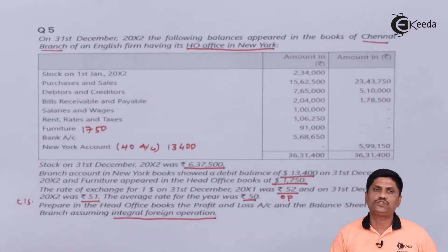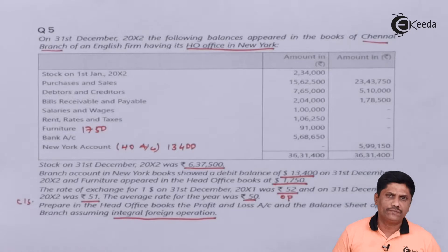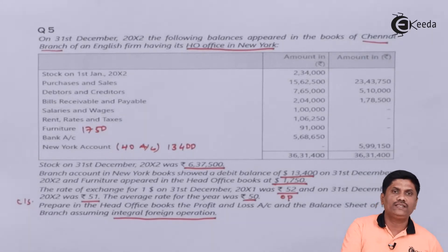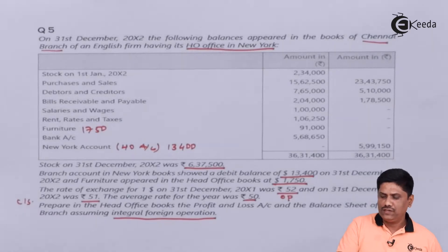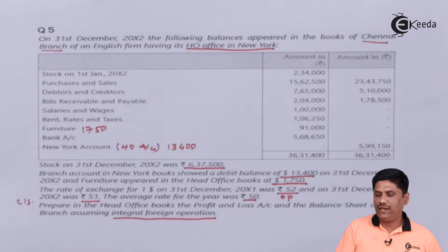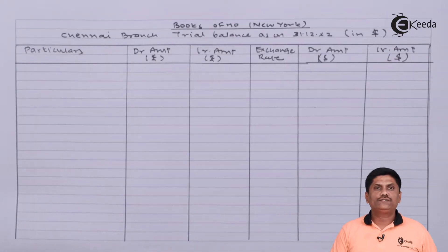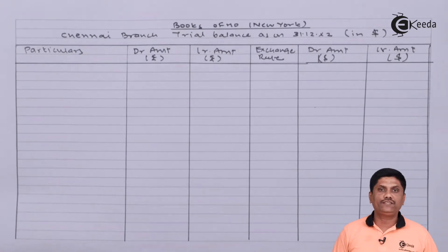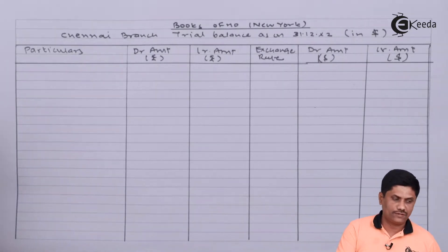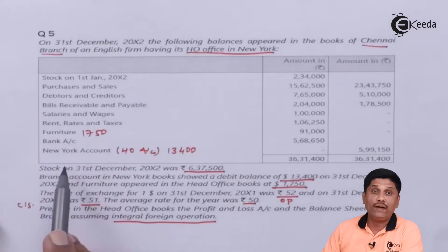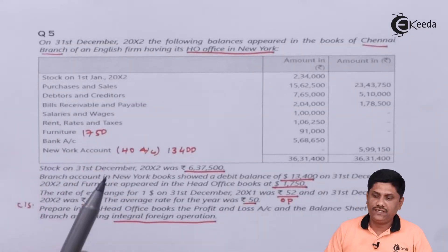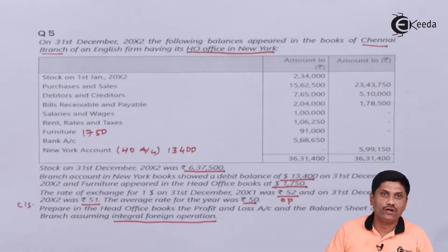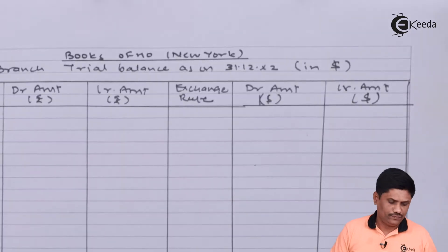So here you need to change the technique slightly, otherwise the question is quite easy. First we will prepare in the books of the head office the branch trial balance. I am just copying the trial balance as given in the question and then I will apply the exchange rate to get revised figures in terms of dollars. Please wait while I write it out.